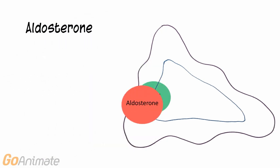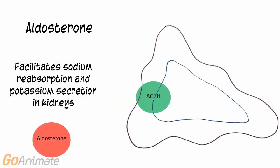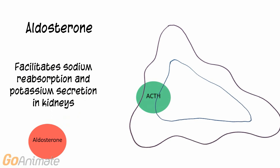Another hormone affected by ACTH is aldosterone. Aldosterone targets the kidneys to cause an increase in sodium reabsorption and potassium secretion.